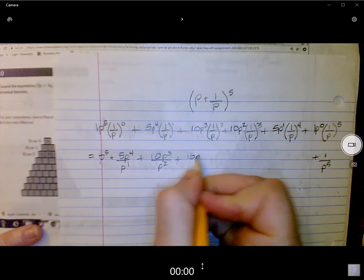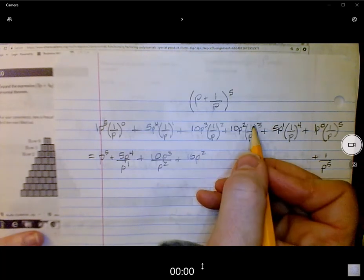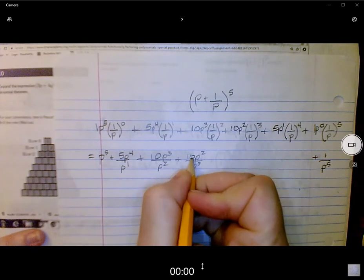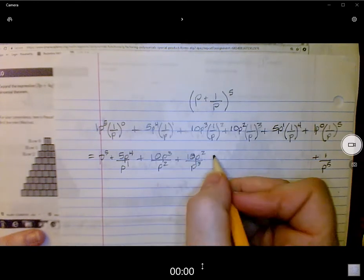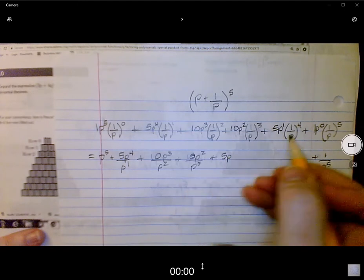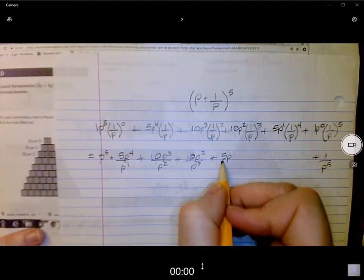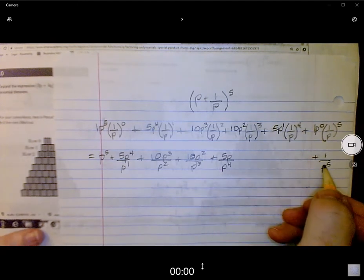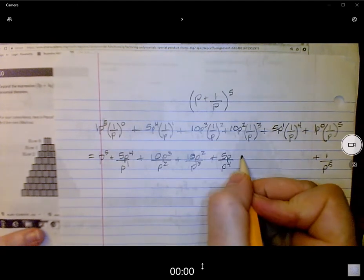Put my P squared under there. And then we have another 10 P, this time squared, 1 over P to the third, so I'm going to put a P to the third. That's a zero, by the way, not a six. And then we have a 5 P, and this is a 1 over P to the fourth, so just move my P to the fourth under there. I think I'll rewrite it here.